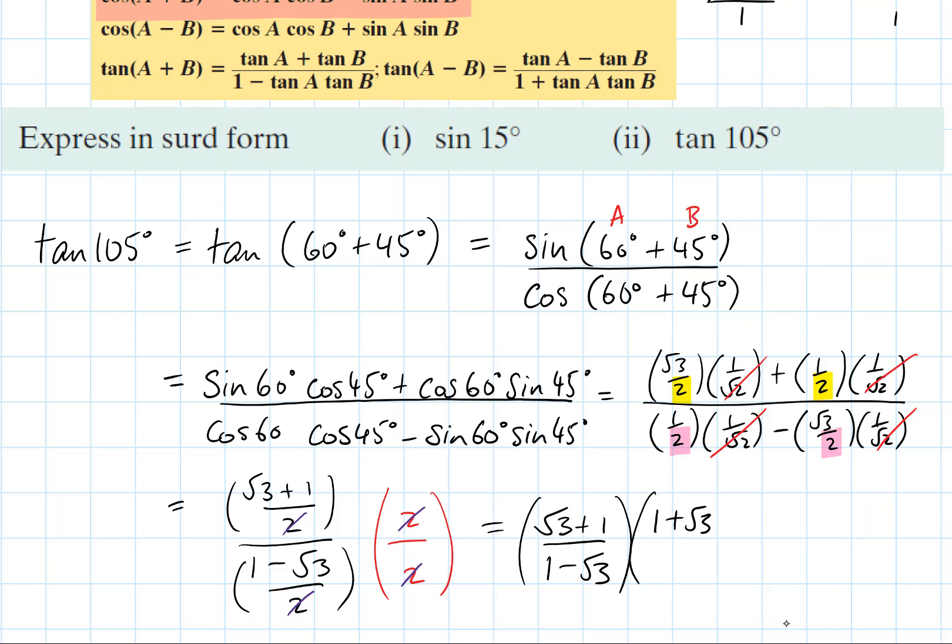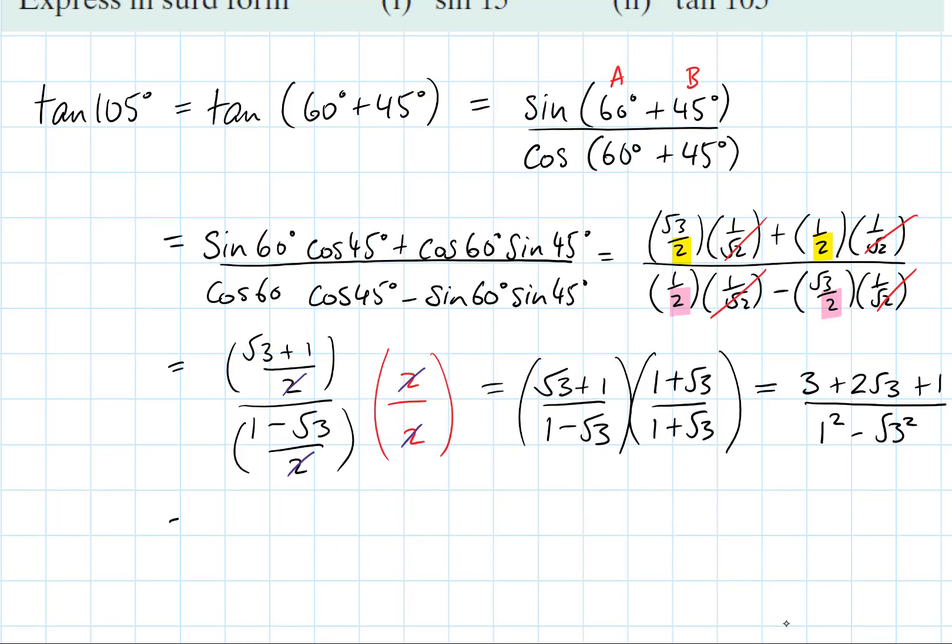We want to rationalize this denominator, so we multiply above and below by the conjugate of the denominator, that's 1 plus root 3. We notice at the top actually we have the same thing in each of them, so we're squaring root 3 plus 1. So square the first thing, multiply the two and double it, square the second thing. We notice underneath our denominator is actually the difference of two squares, so it would be 1 squared take root 3 squared.